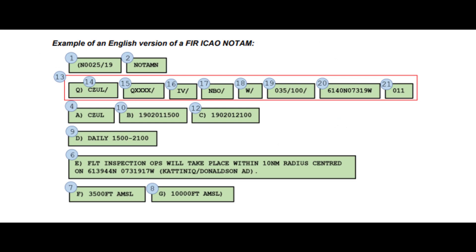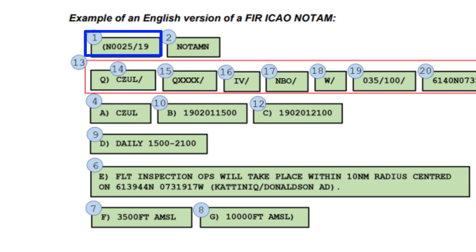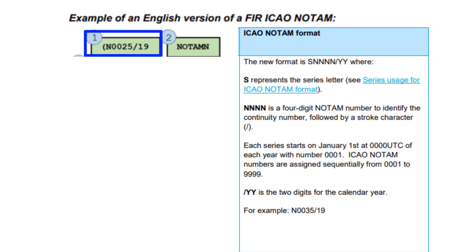Every IKO NOTAM begins with a top line. The first letter in this line indicates the series. The next four numbers is the four-digit NOTAM number. And then the final two numbers in this first block is going to be the year in which that NOTAM was published.